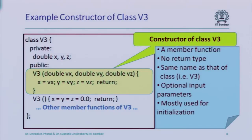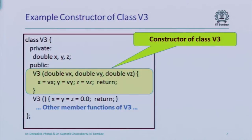The constructor function basically looks like a function defined within the class, has the same name as the class, does not have a return type, and can take a list of parameters or may not take any parameter. All we require is that if there are multiple constructor functions, their list of typed parameters should be different.